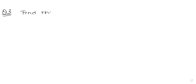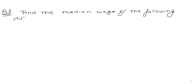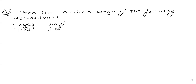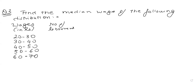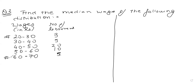Question number 3 — now we have a continuous frequency distribution. Find the median wage of the following distribution. We are given wages in rupees: 20–30, 30–40, 40–50, 50–60, 60–70, and the number of laborers: 3, 5, 20, 10, and 5 respectively. The data is already in ascending order starting from 20 to 70, so we don't need to rearrange it.